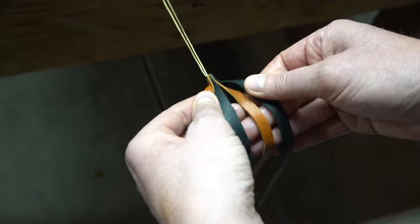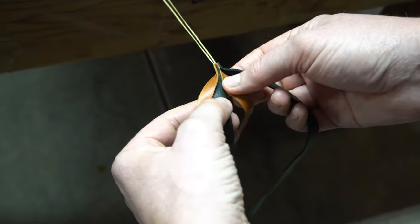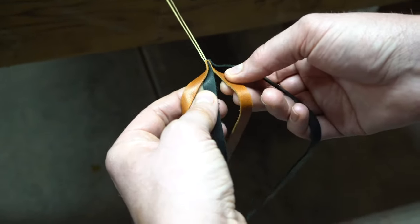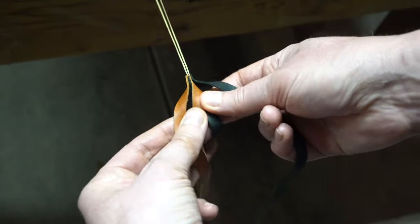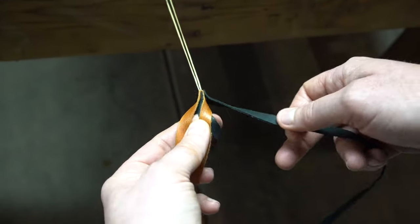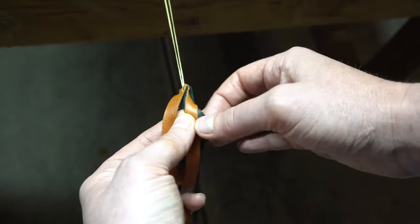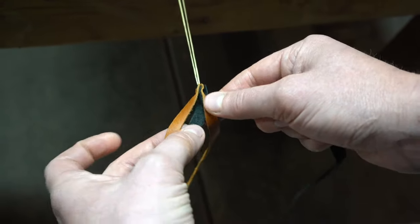So to start your braid, you start with the middle two. You take number three over number two. Cross it over. So take number four then, around the back, and come between one and two.